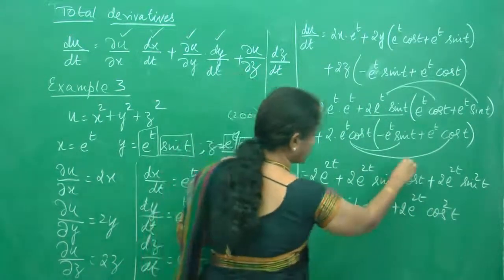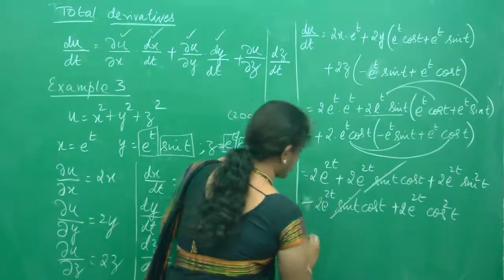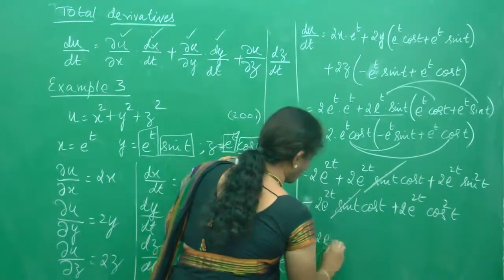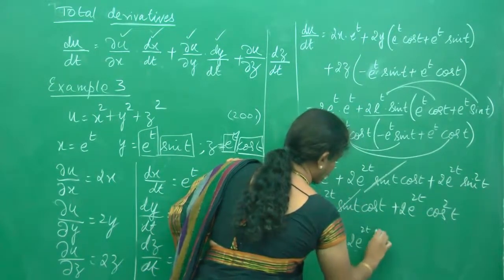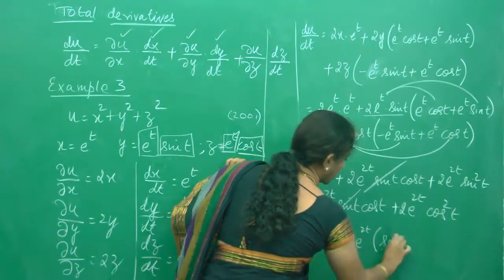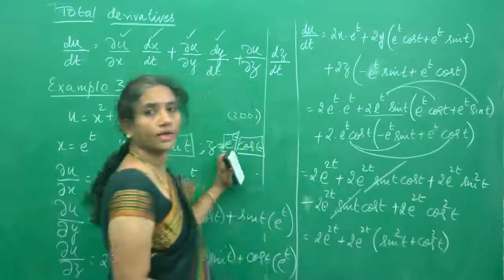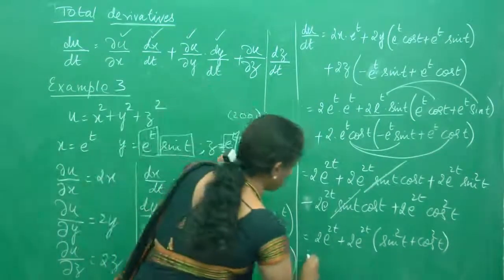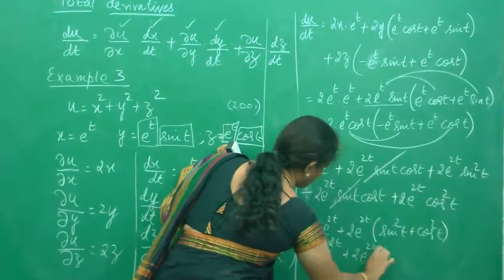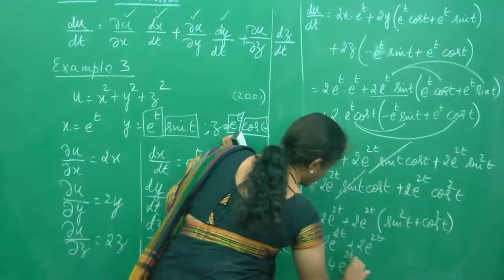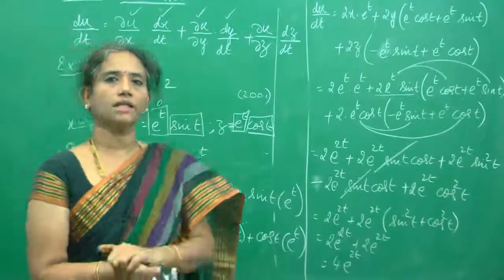Now the positive 2 e power 2t sin t cos t and the negative 2 e power 2t sin t cos t cancel each other. So this is nothing but 2 e power 2t, plus 2 e power 2t is common in the remaining terms, giving sin square t plus cos square t, which equals 1. So this becomes 2 e power 2t plus 2 e power 2t, and the net answer is 4 e power 2t. Substitute everything in terms of t and that is the final answer.